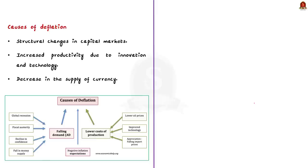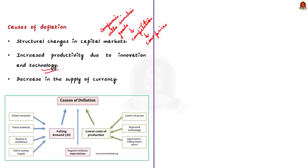Deflation can be caused by multiple factors. First, structural changes in capital markets: when companies selling similar goods compete, there is a tendency to lower prices, causing deflation. Second, increased productivity — innovation and technology enable increased production efficiency, leading to lower prices. Third, a decrease in the supply of currency decreases the price of goods and services to make them affordable.